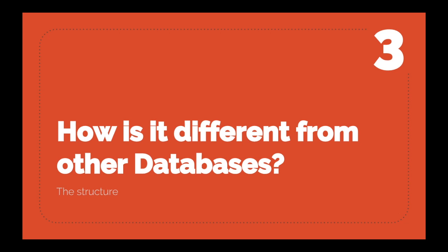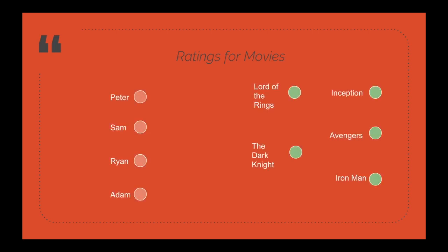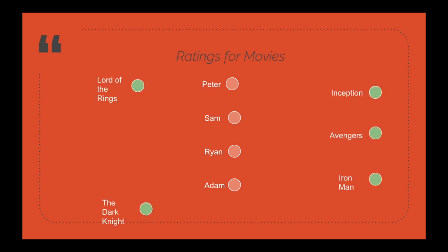Let's see how graph databases differ from traditional databases using an IMDB example. There are five movies — Lord of the Rings, The Dark Knight, Inception, Avengers, and Iron Man — and four users: Peter, Sam, Ryan, and Adam. These users rate movies on the website. Peter rates Lord of the Rings three stars, Sam gives two stars, Ryan gives two stars, and Adam gives three stars.